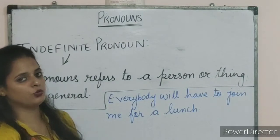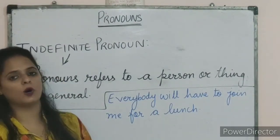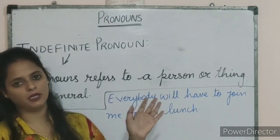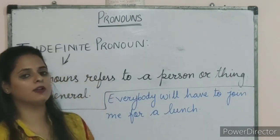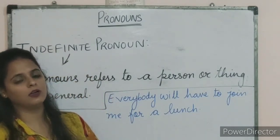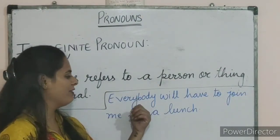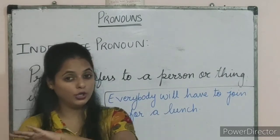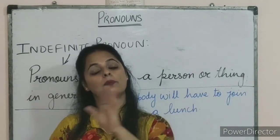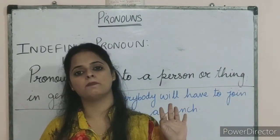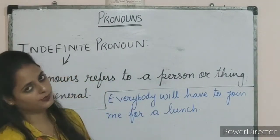For example, if I say 'everybody will have to join me for a lunch,' everybody will have to join me for a lunch. I am saying this to each and everybody, whosoever I am talking about. I am telling them that everybody will have to join me for lunch. Now everybody is in general — I am talking to each and everybody or the persons who are standing there.